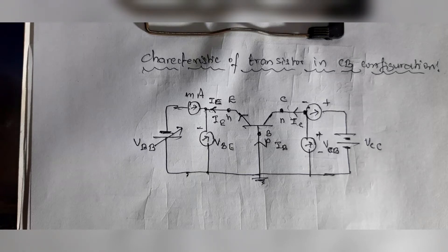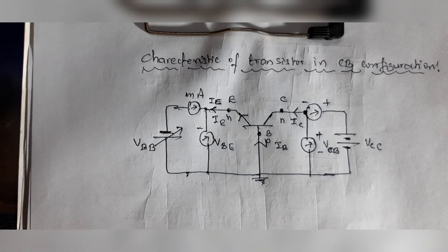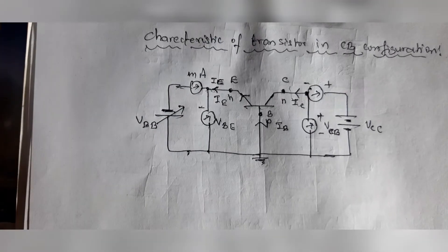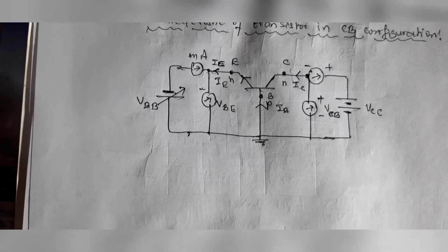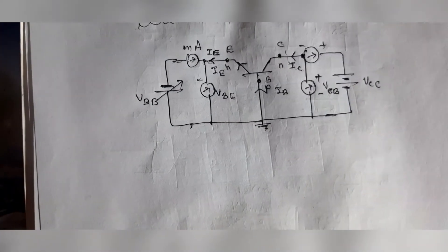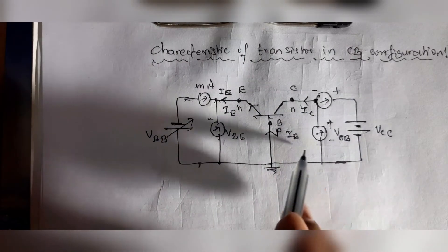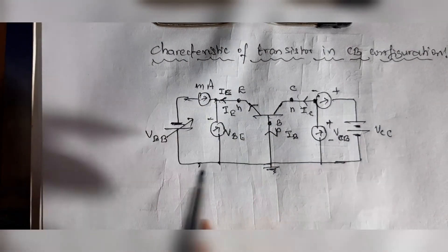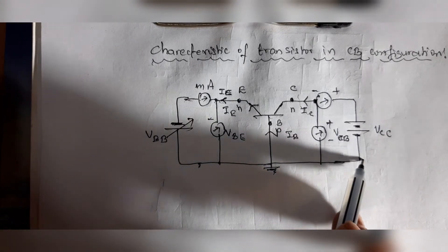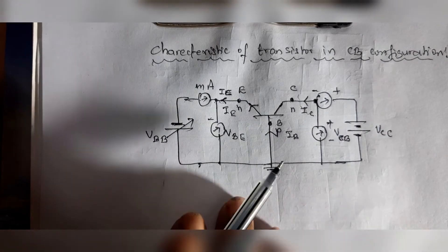Welcome to the characteristics of a transistor in another configuration known as CB configuration, that is common base configuration. The circuit diagram to draw the characteristics of a transistor in common base configuration is shown in this figure. Here, the base is common for both input and output, hence it is called common base configuration.